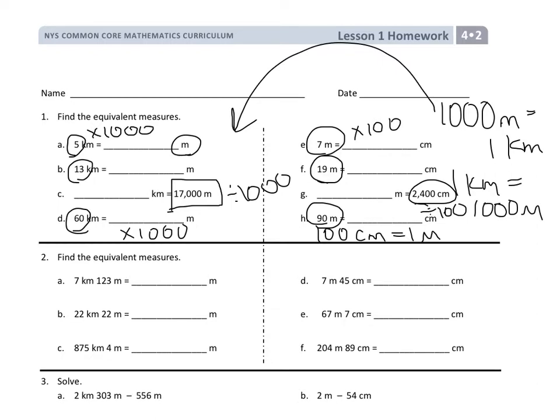For part 2, students are going to have to convert one thing and then combine. So here they want to figure out how many meters are in the 7 kilometers. If they remember what we said, 1,000 meters is in 1 kilometer. This would be 7,000. They'd add the 123 to get the new total meters.